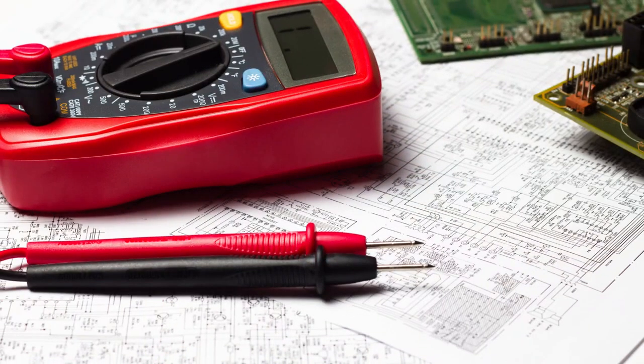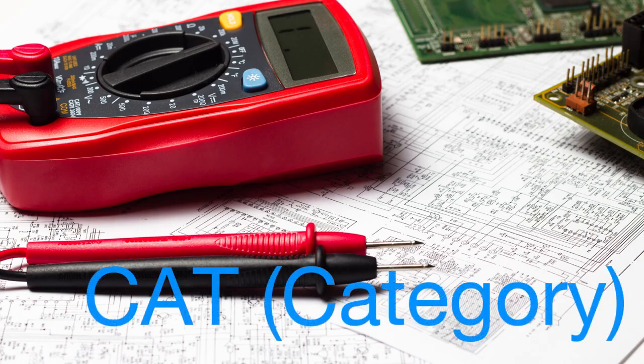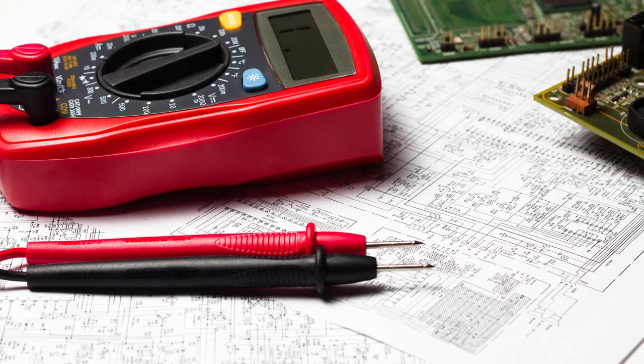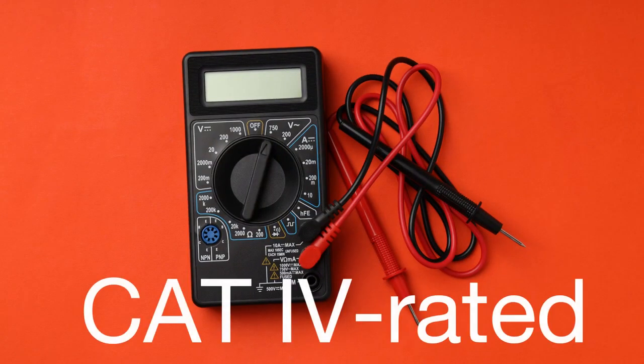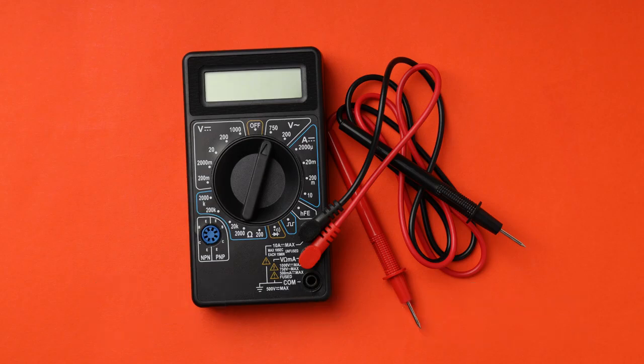Moreover, many digital multimeters are equipped with safety ratings, such as CAT category ratings, indicating their suitability for different voltage levels and environments. For instance, a CAT 4-rated multimeter is safe for testing in areas close to the utility connection, like outdoor wiring or industrial environments.